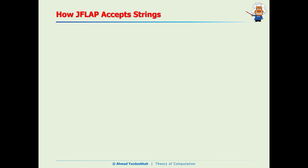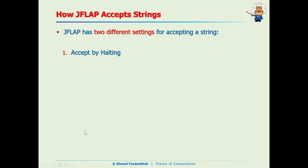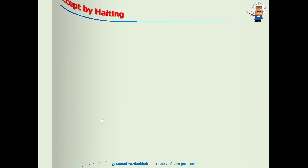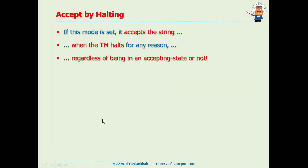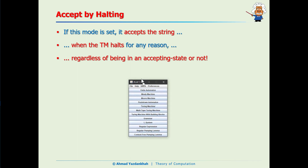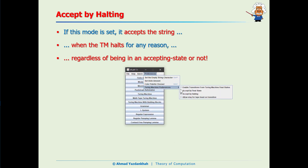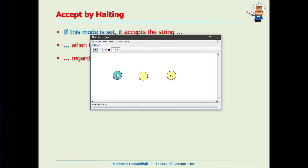Now let's talk about how JFLAB accepts strings. JFLAB has two different settings: accept by halting and accept by final states. In accept by halting mode, JFLAB accepts a string when the machine halts, regardless of whether it is in an accepting state or not. Let me demonstrate — first we make sure this setting is checked: yes, accept by halting. Now I'll create a simple Turing machine and set an initial state, with no final state needed.